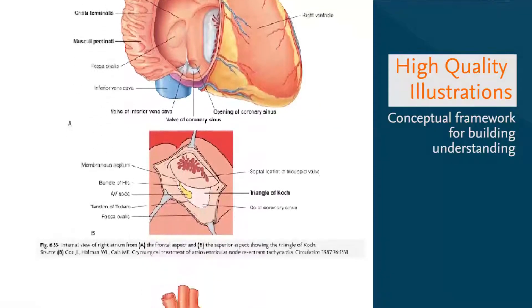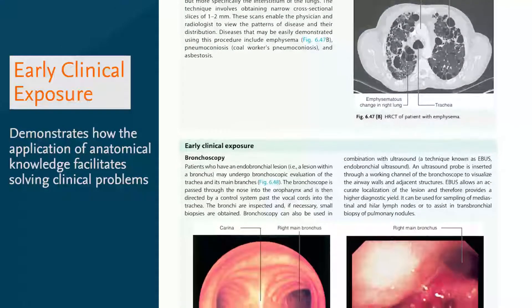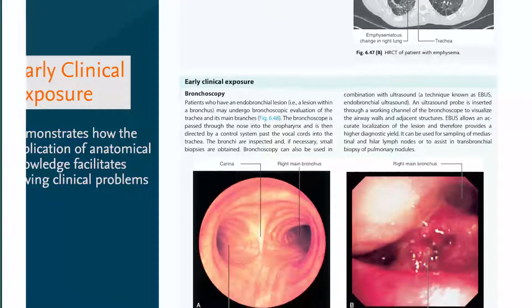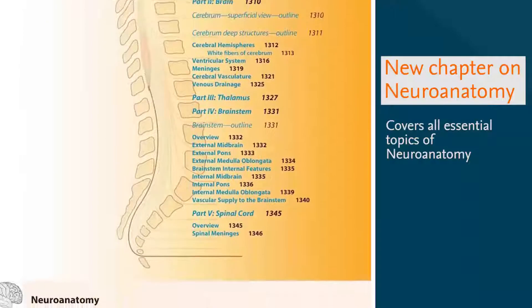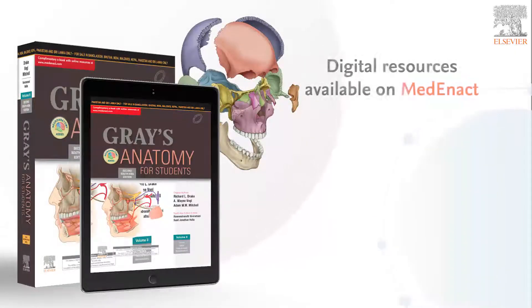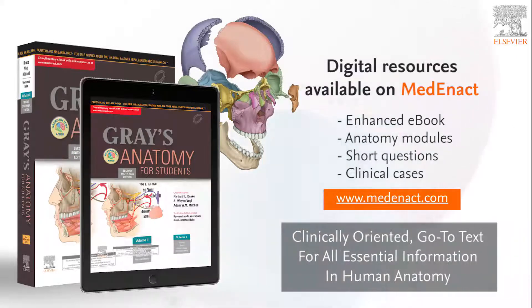Early clinical exposure sections are concise descriptions of how the application of anatomical knowledge facilitates solving clinical problems. Neuroanatomy introduces the basic structures and functions of the individual and systemic components of the human nervous system. This edition is supplemented with an enhanced e-book and digital ancillaries. Gray's Anatomy for Students: building a legacy of anatomical excellence.